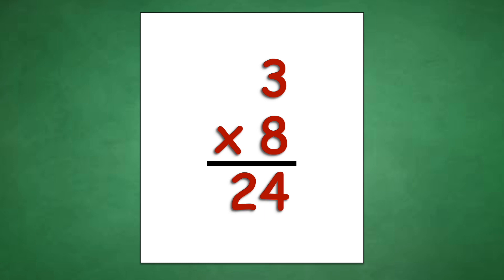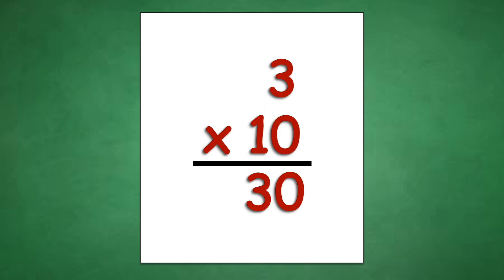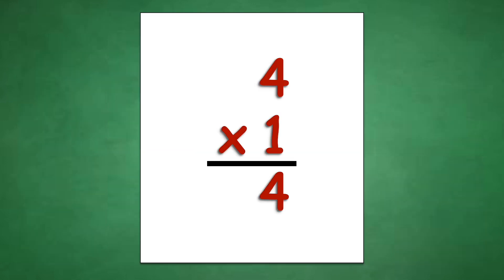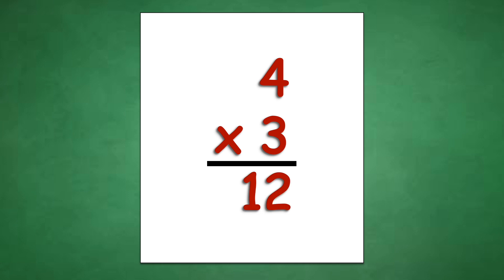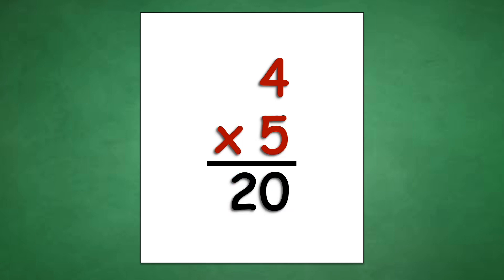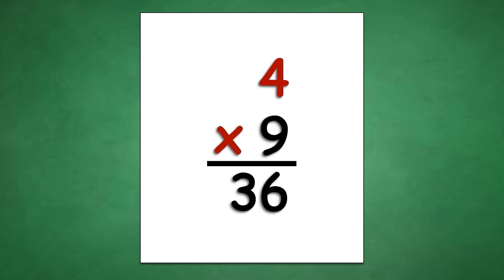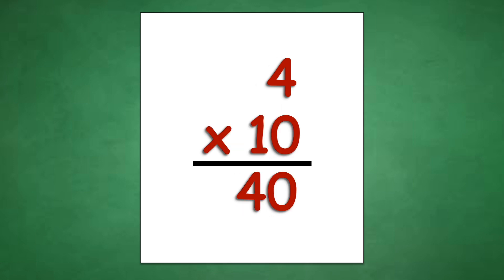Table of 4: 4 times 1 equals 4, 4 times 2 equals 8, 4 times 3 equals 12, 4 times 4 equals 16, 4 times 5 equals 20, 4 times 6 equals 24, 4 times 7 equals 28, 4 times 8 equals 32, 4 times 9 equals 36, 4 times 10 equals 40.